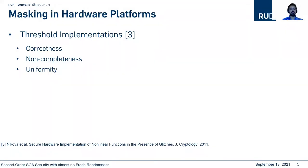Threshold Implementation (TI) is the first methodology which is immune against glitches. TI is based on three conditions: correctness, non-completeness, and uniformity. The number of input shares depends on the algebraic degree of the target function and also the security order D.